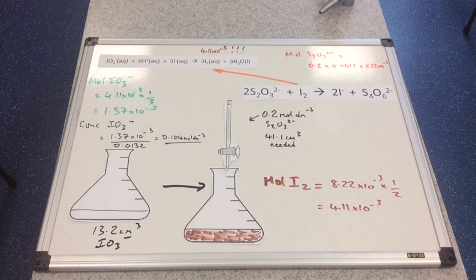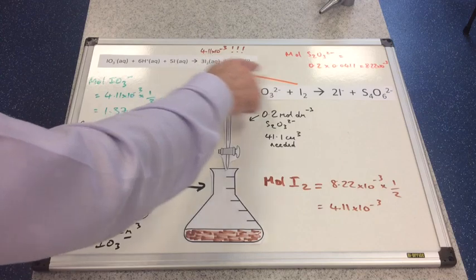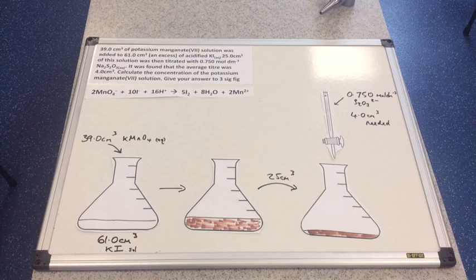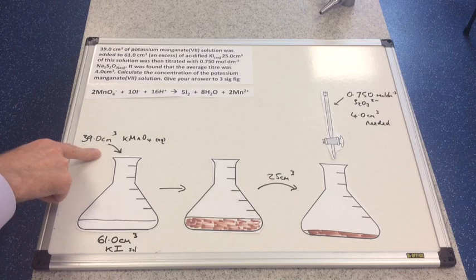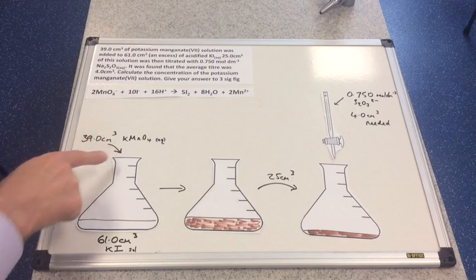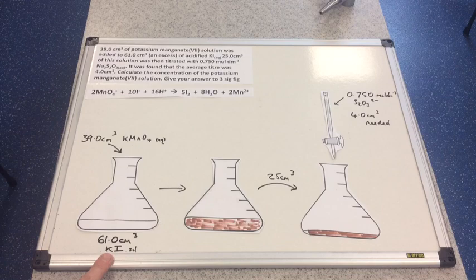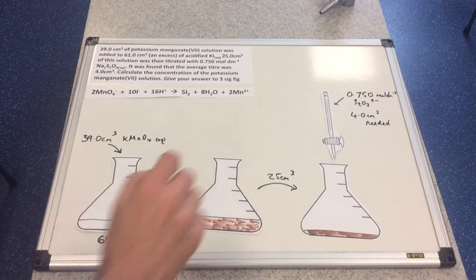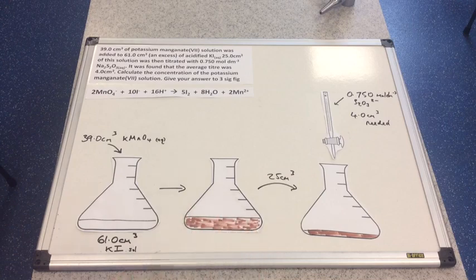If you got that right, very well done — it's quite tricky, and the mole ratio step is where the confusion lies. The next example: we've got 39 cm³ of potassium manganate(VII) solution added to 61 cm³ of potassium iodide solution. The KMnO4 is the oxidizing agent; it oxidizes iodide to iodine, producing the brown iodine solution you can see. The equation for that is shown on the board.